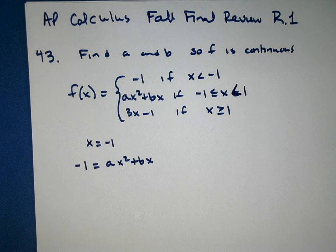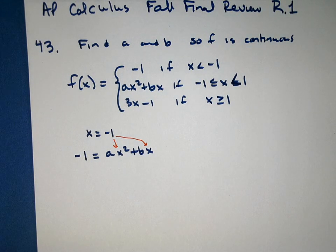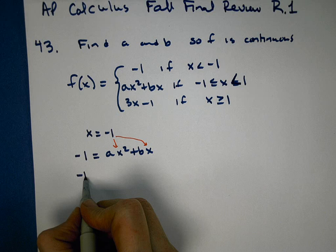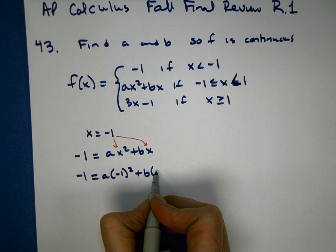And we are going to plug in this actual value of X here, because we want them to equal when X is negative 1. So I'll have negative 1 equals A times negative 1 squared plus B times negative 1.